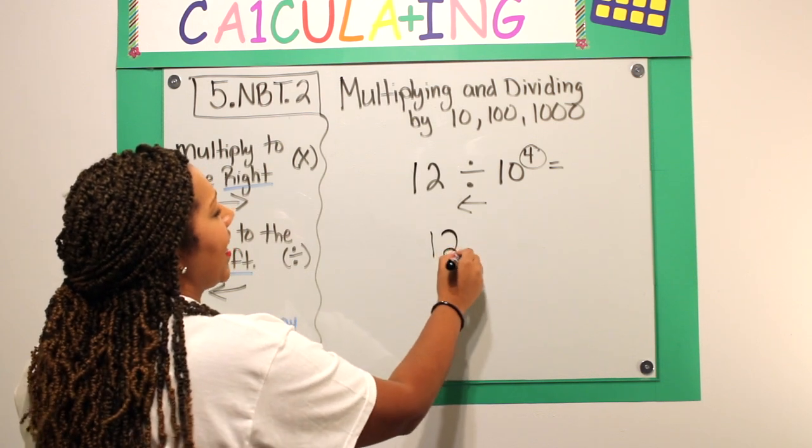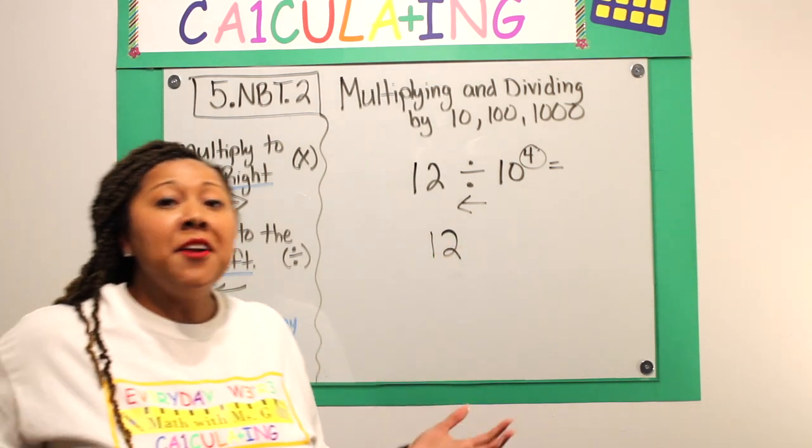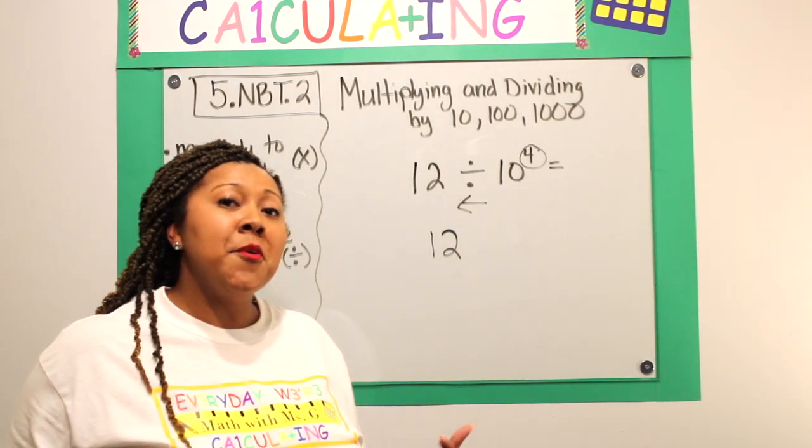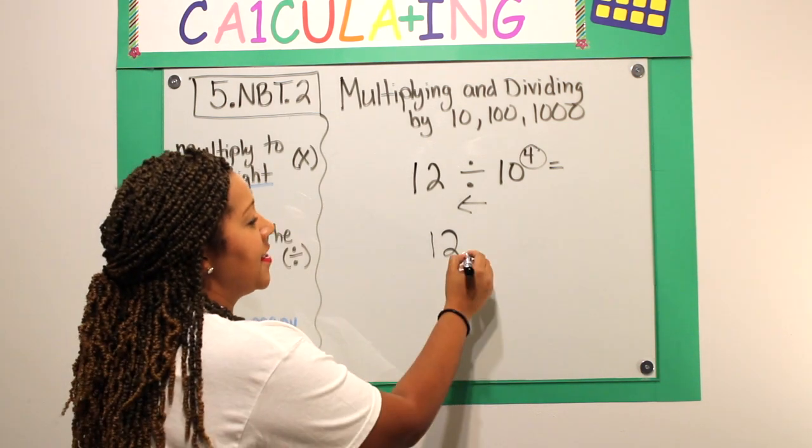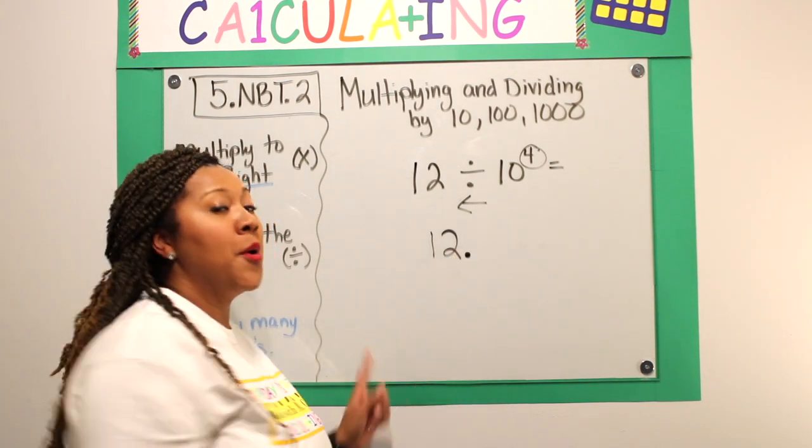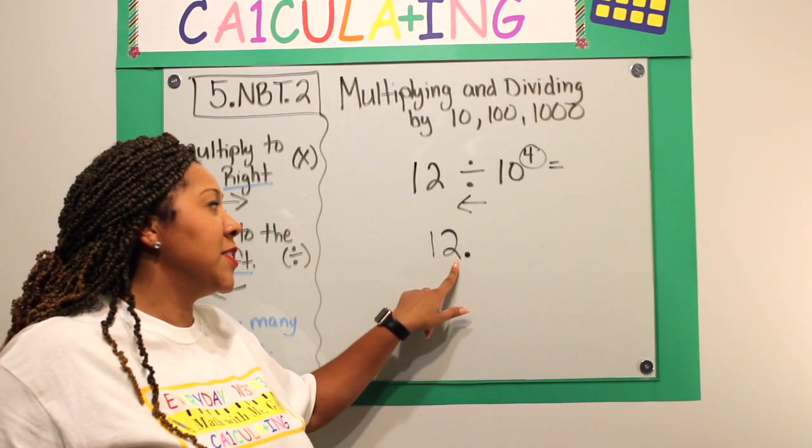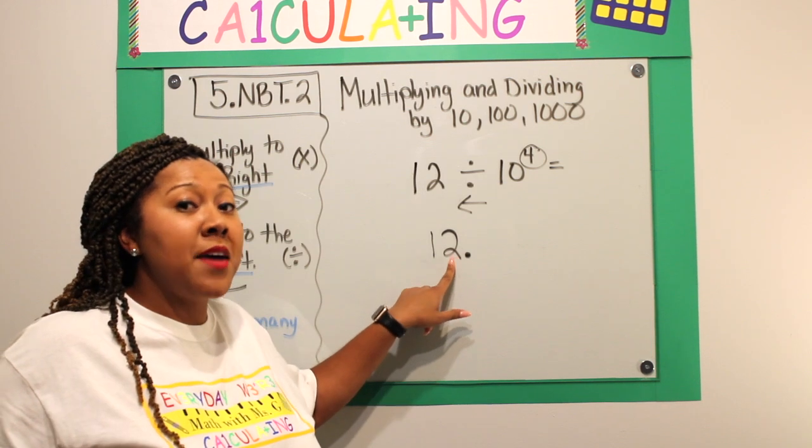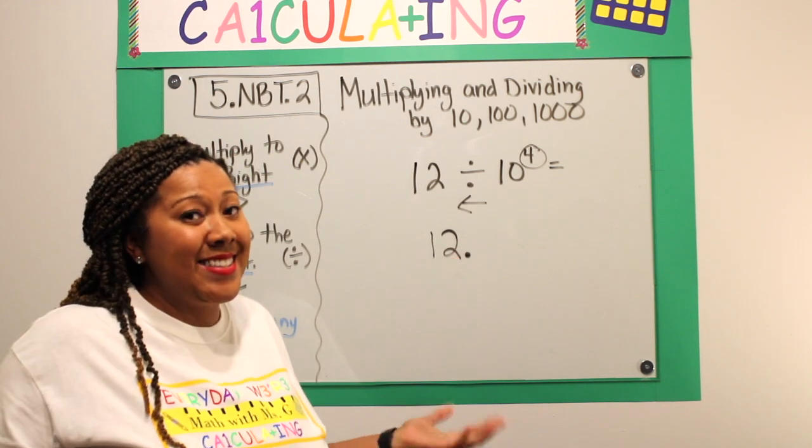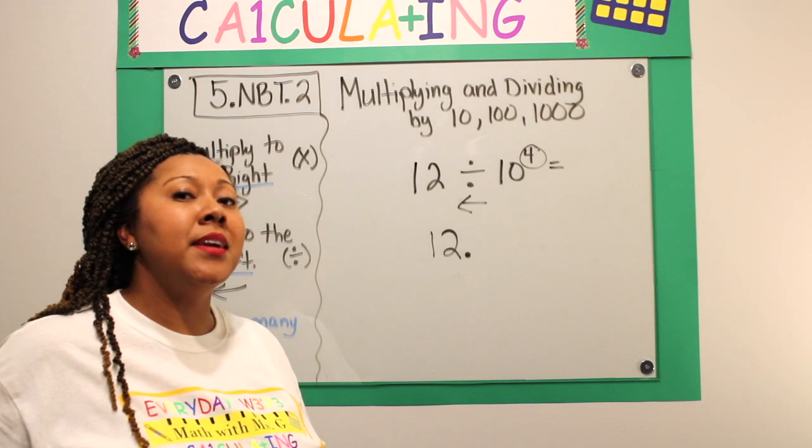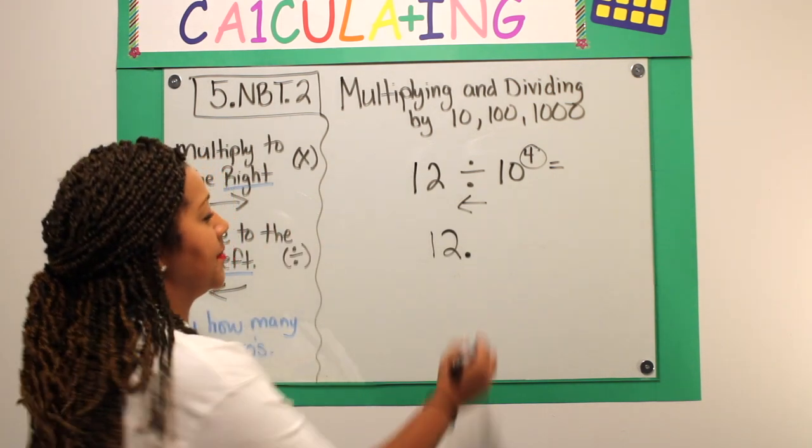This is interesting. I have a whole number and I don't have a decimal. What you need to remember is there is a decimal right behind the ones place. We can assume that the two is in the ones place because it's the last digit. My decimal is going to be here and I'm going to move it four times.